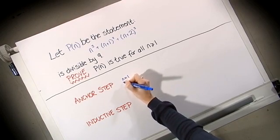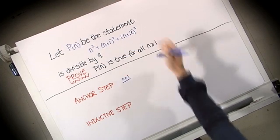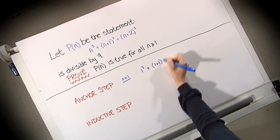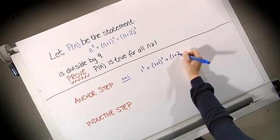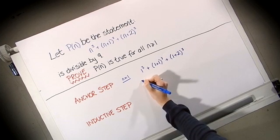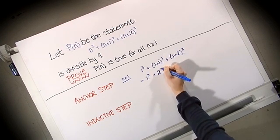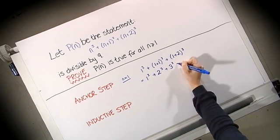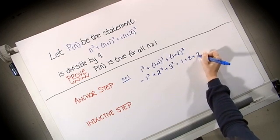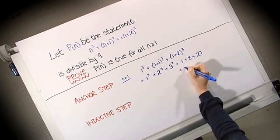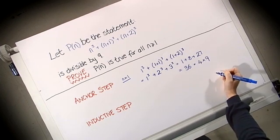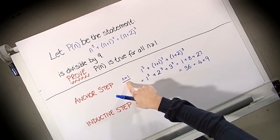So for when n equals 1, using this expression, we have 1 cubed plus (1+1) cubed plus (1+2) cubed. This gives me 1 cubed plus 2 cubed plus 3 cubed. And we've already seen this before. We have 1 plus 8 plus 27, which gives me 36. And again, this can be written as 4 times 9. So the case for when n equals 1 is true. We've shown that it's divisible by 9.